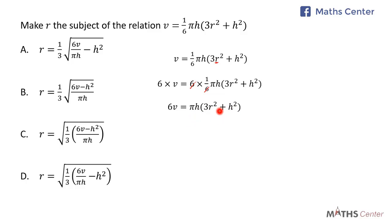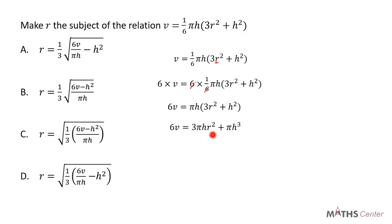Expanding the bracket: 6V = πH × 3R² + πH × H², which gives 6V = 3πHR² + πH³. We want to make R the subject, so we bring πH³ to the left-hand side: 6V − πH³ = 3πHR².